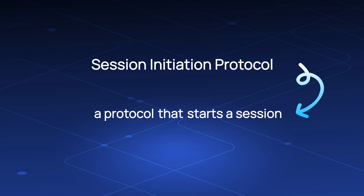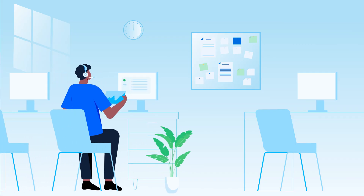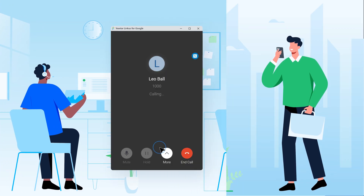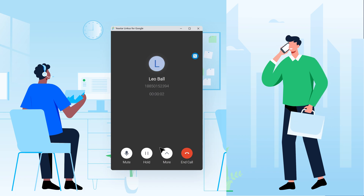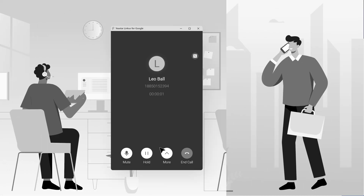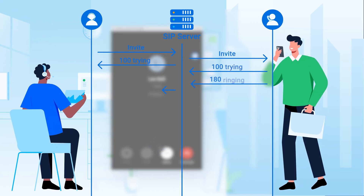For starters, we will explain how does it initiate a communication. Let's take a SIP phone call as an example. If you need to call a colleague, you dial the number and your colleague's phone rings. You wait for a while, then your colleague answers the call and you can talk. That's everything you can experience. However, before you guys can really start a conversation, your phone must firstly talk to your colleague's phone to establish a communication session using a series of signals.